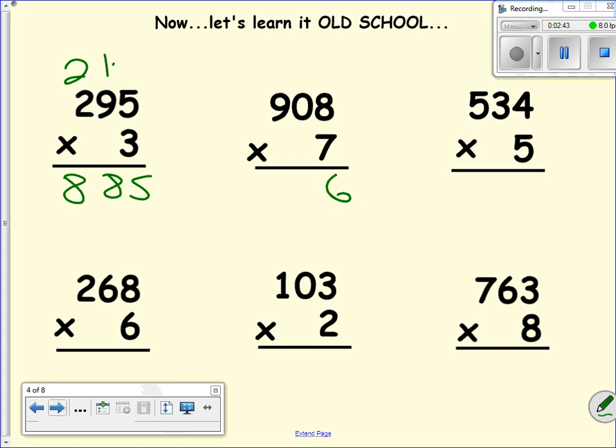Move on over. Eight times seven is 56. Seven times zero is zero plus this five is five. Nine times seven is 63.